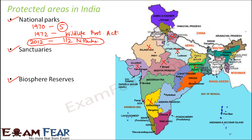If you actually start naming all the 112 national parks, you will see that they are distributed throughout the country — in different parts, starting from Jammu and Kashmir to Assam to Tamil Nadu, Kerala — everywhere you have national parks. So a good number of national parks are present in India.